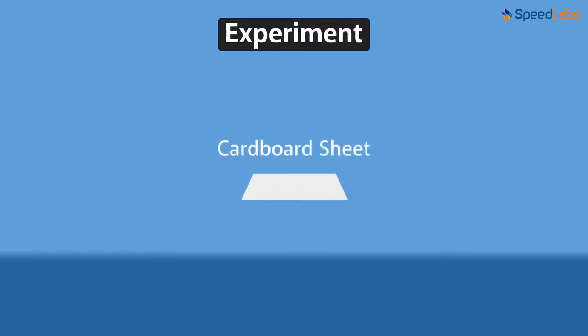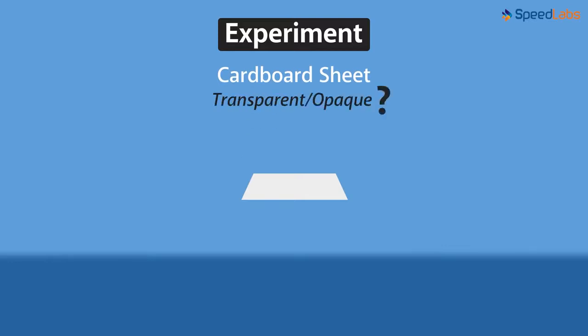Let's start this video by looking at a very simple experiment. Take a rectangular cardboard sheet. First tell me, is cardboard paper a transparent or an opaque object?